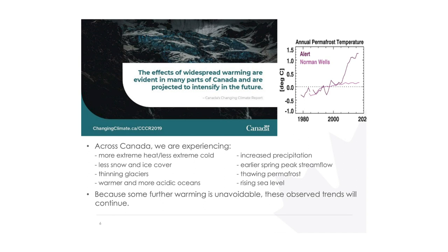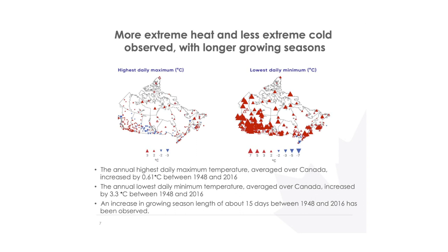Temperature extremes are also changing. The figure on the left shows changes in the highest daily maximum temperature over the year — the hottest day. The figure on the right shows changes in the lowest daily minimum temperature — the coldest day of the year. We don't see a huge signal in the highest daily maximum, but we do see a very large and uniform change in the lowest daily temperature. The coldest days of the year are becoming less cold virtually everywhere, which has implications for the growing season, which has increased on average about 15 days over the period 1948 to 2016.